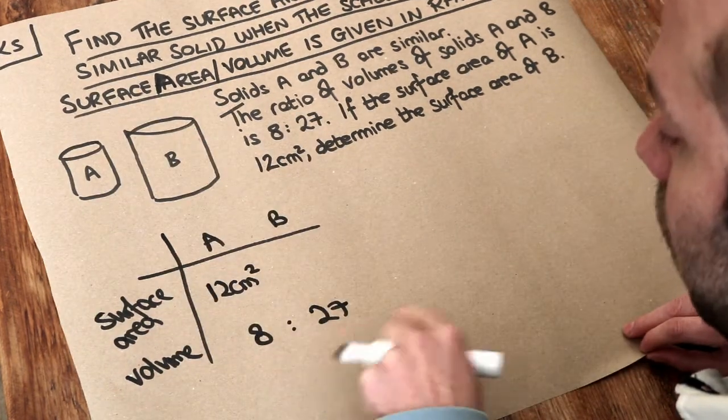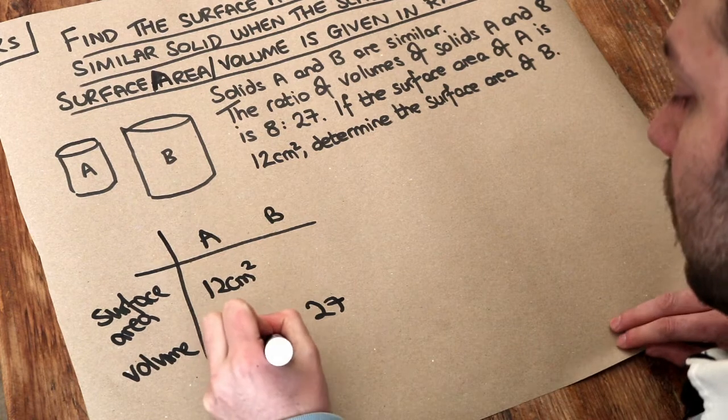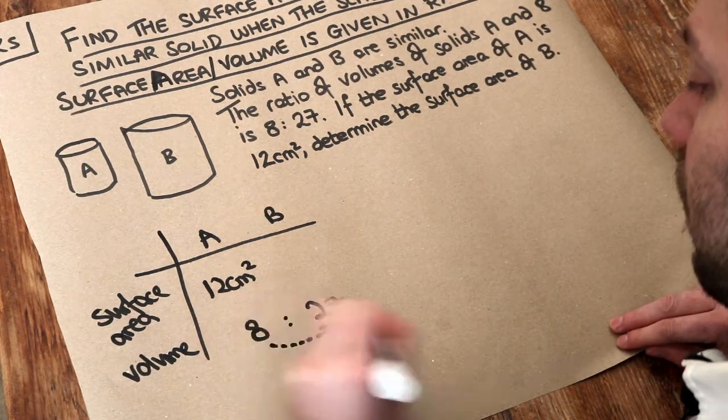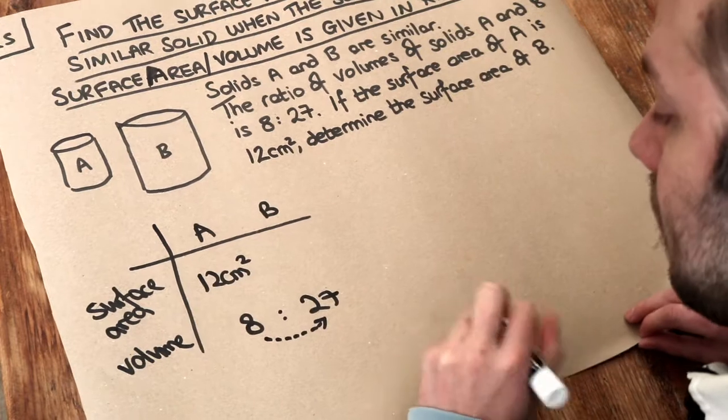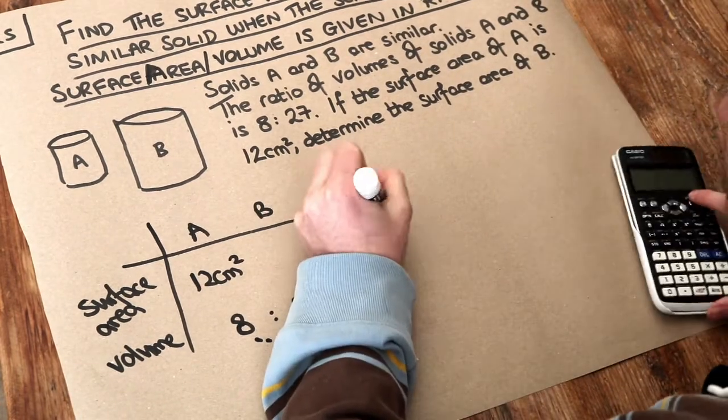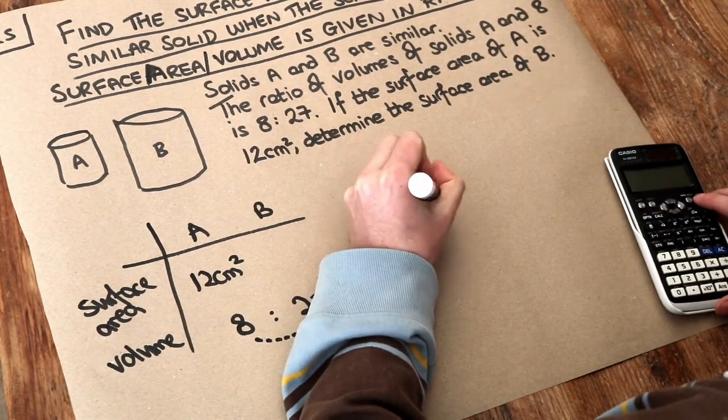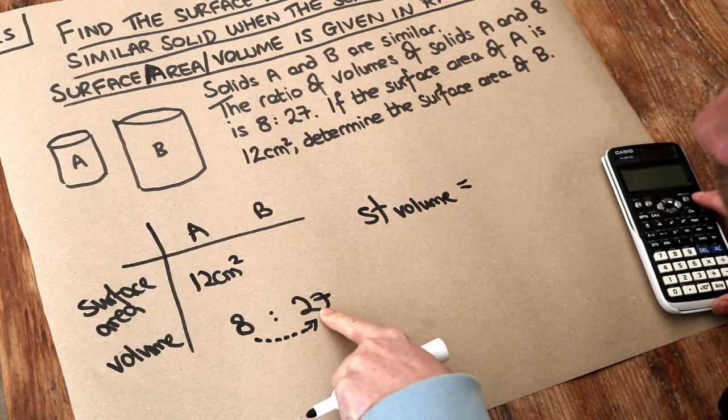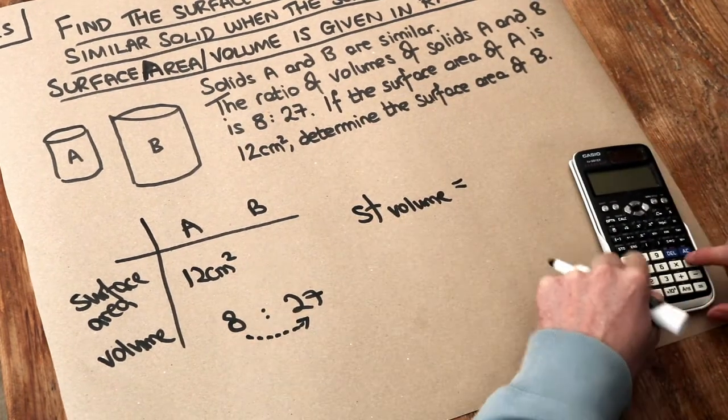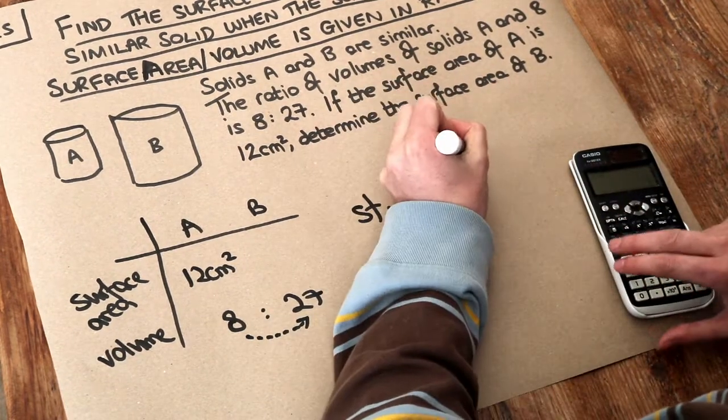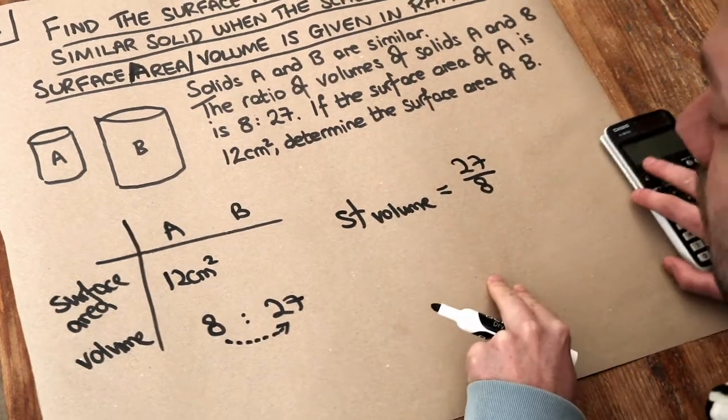Now we're given these ratio volumes so we could find the scale factor of volume. That's how we dealt with previous problems of this nature. The scale factor of volume we can just divide these two numbers. How many times bigger is 27 than 8? We do 27 divided by 8. We can just leave it as 27 over 8 rather than give it as a decimal.